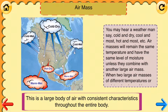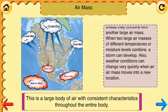Air mass: this is a large body of air with consistent characteristics throughout the entire body. You may hear a weatherman say cold and dry, cool and moist, hot and moist, etc. Air masses will remain the same temperature and have the same level of moisture unless they combine with another large air mass. When two large air masses of different temperatures or moisture levels combine, a storm can develop.